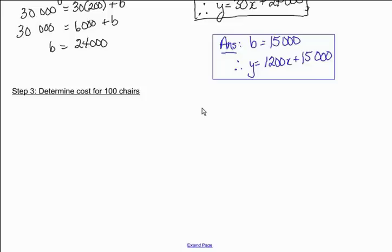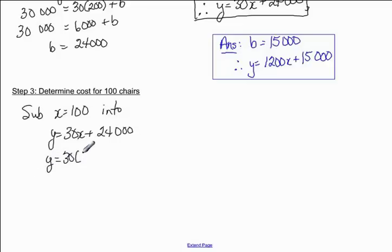We're now going to move on to step three, which is to determine the cost for 100 chairs. So what we need to do is sub x equaling 100 into our equation. So sub x equaling 100 into that final equation, which is y is equal to 30x plus 24,000. Okay, so y represents our cost, so we're going to find what the cost is for 100 chairs. So y is equal to 27,000.